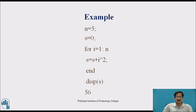Another example: n equals to 5, s equals to 0. In a loop for i from 1 to n, execute s is equal to s plus i squared, end. Again n has value 5, s is initially 0, and i takes values from 1 to n. The loop stops when i reaches 5. Each time the expression s equals s plus i squared is executed. Once i becomes 5, the loop exits and displays the last value of s, which is 56.